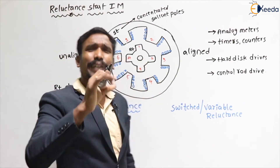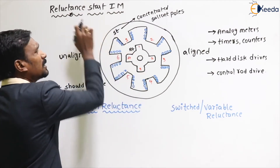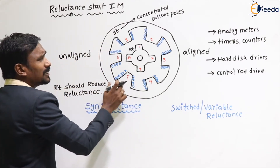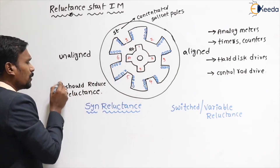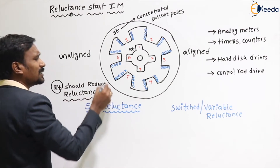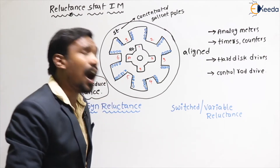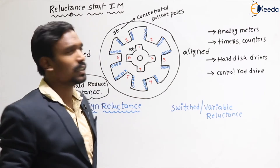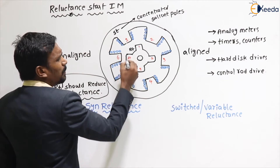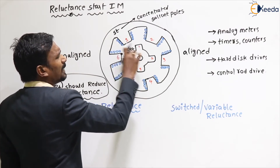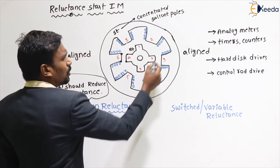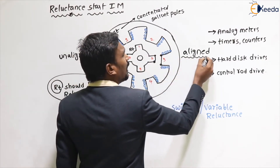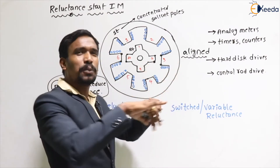Due to only the reluctance, the rotor will start rotation — that's why this is called a reluctance start induction motor. The torque is produced because the rotor tries to reduce the reluctance. For example, here my rotor pole and the stator pole are completely in the same position — this is called the fully aligned position.